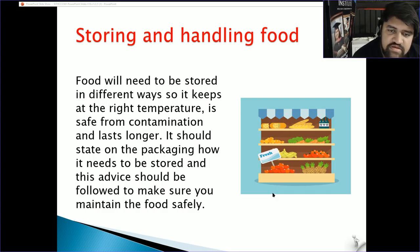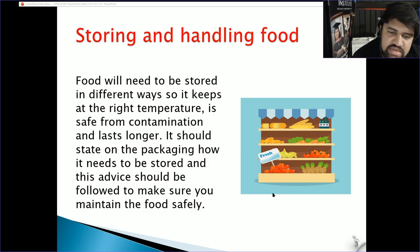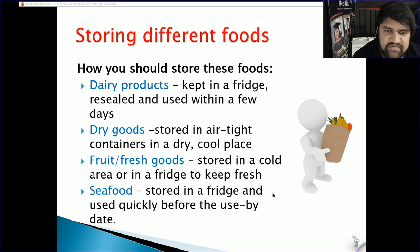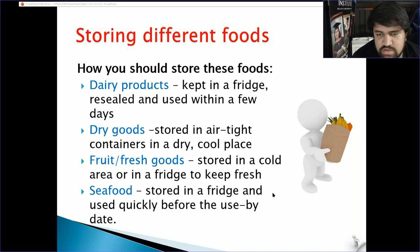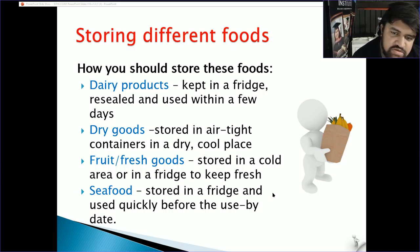Storing and handling food: food needs to be stored in different ways to keep it at the right temperature, safe from contamination, and to last longer. It should state on the packaging how it needs to be stored. Dairy products should be kept in a fridge, resealed and used within a few days. Dry goods should be stored in airtight containers in a dry, cool place. Fruit and fresh goods in a cold area or fridge. Seafood stored in a fridge and used quickly before the use-by date.